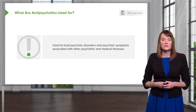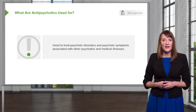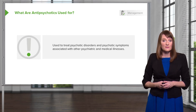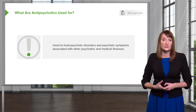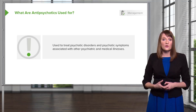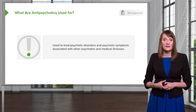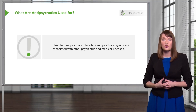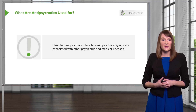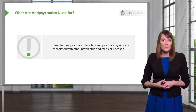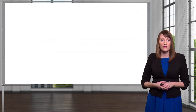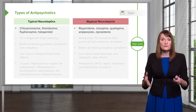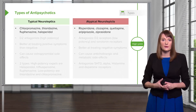Psychosis can actually appear as a symptom of severe depression, and it can also come up during times of dementia. So there are a lot of uses for antipsychotics and they can occur in other patients who don't only have a primary psychotic disorder. Let's go through the two types: typical and atypical.